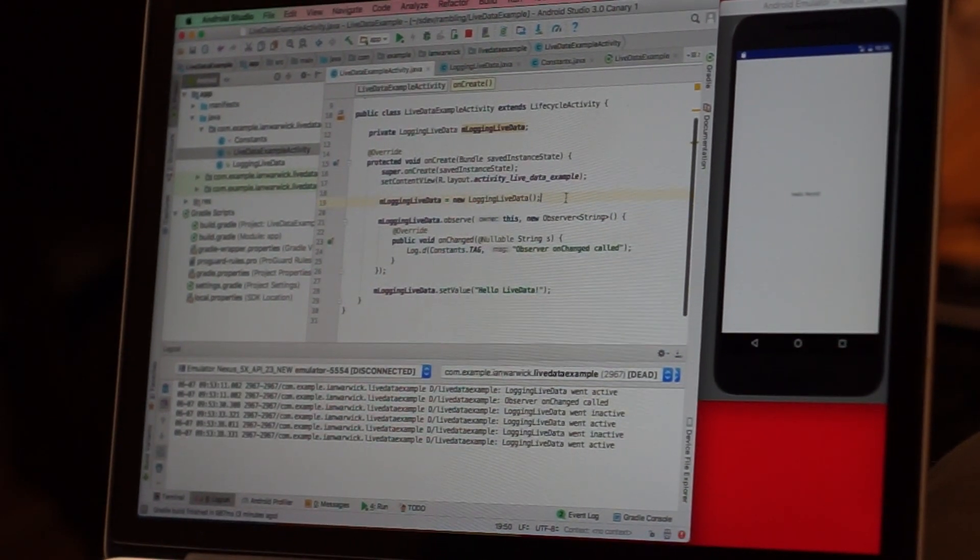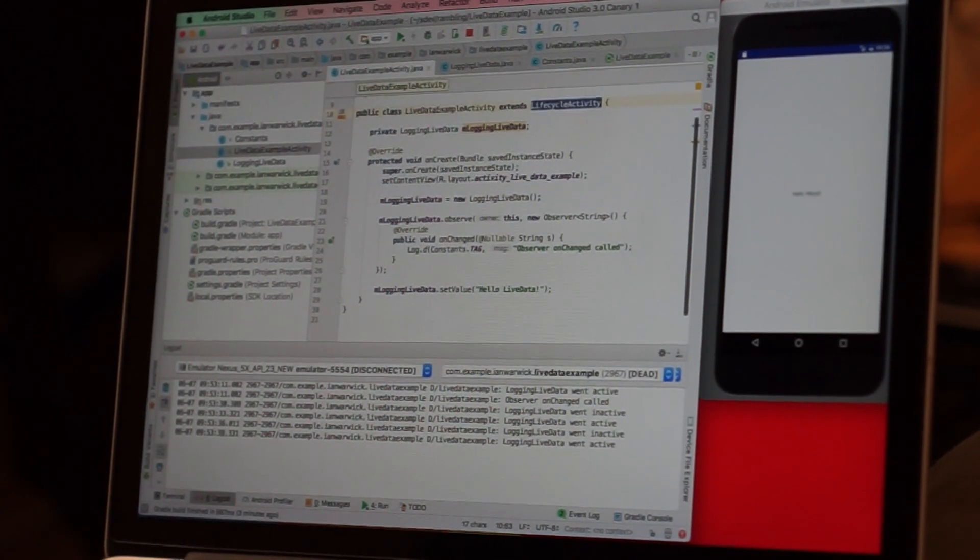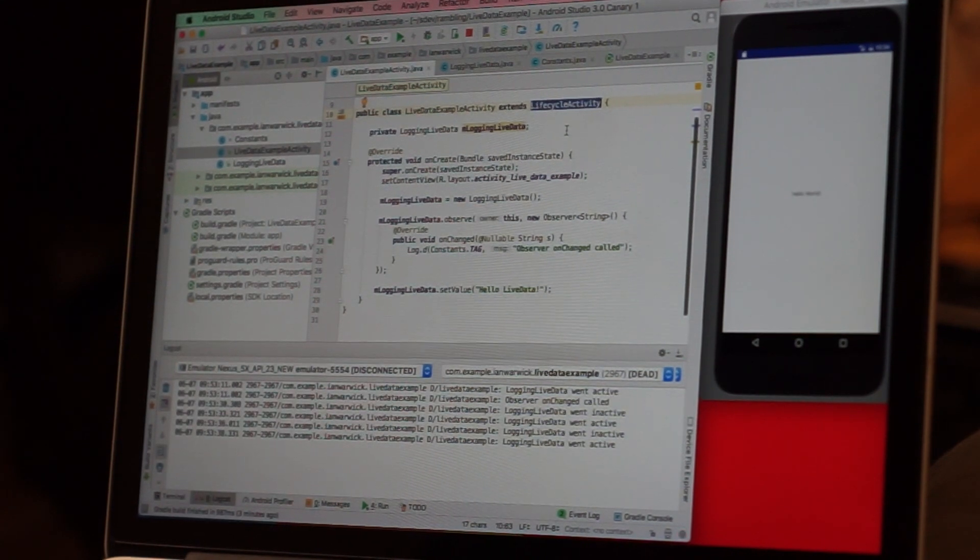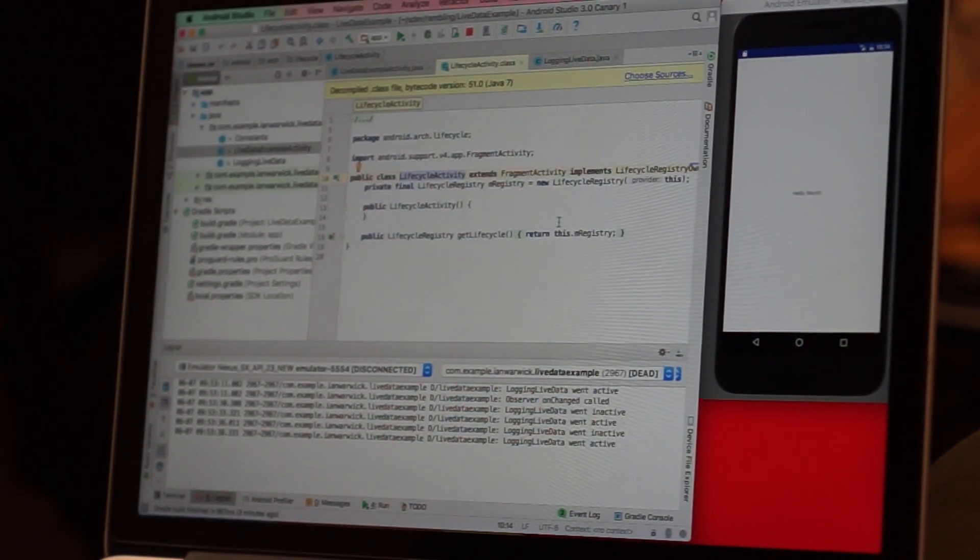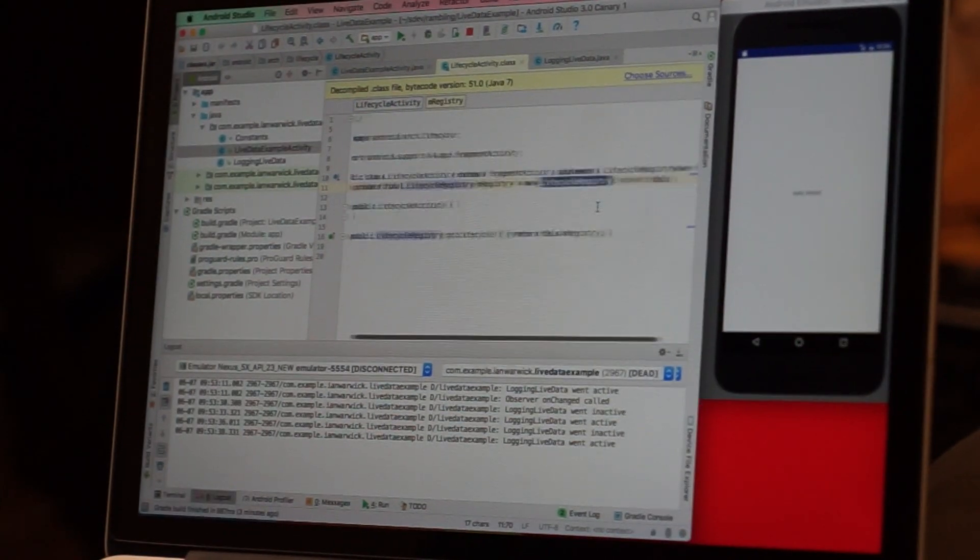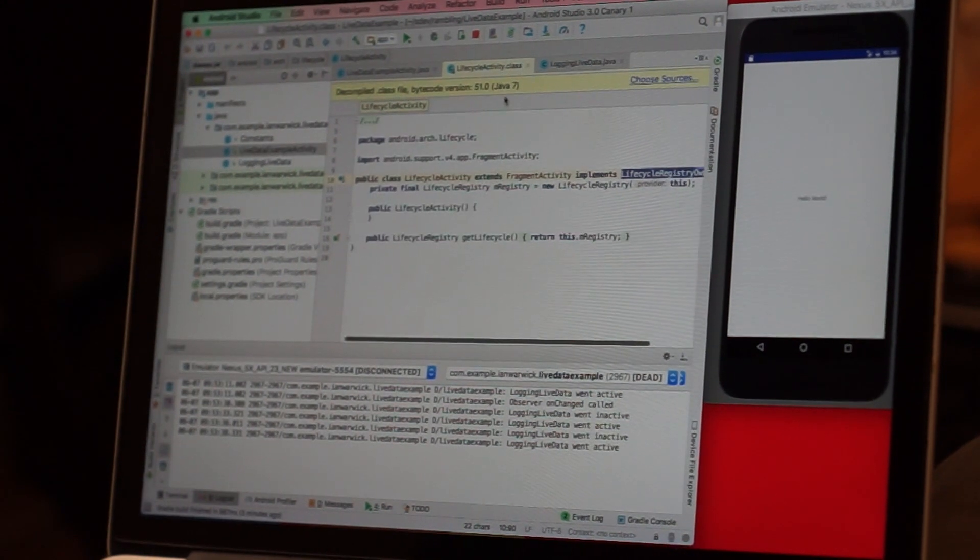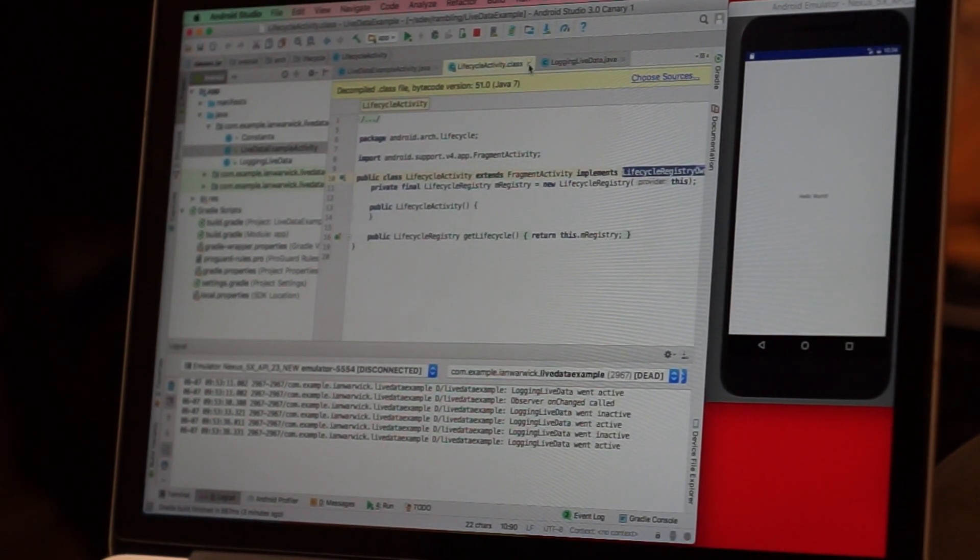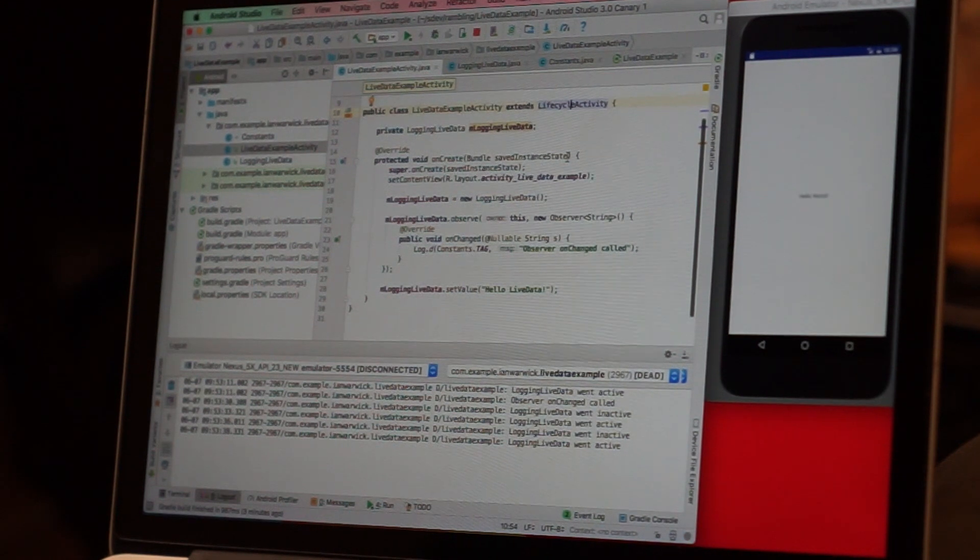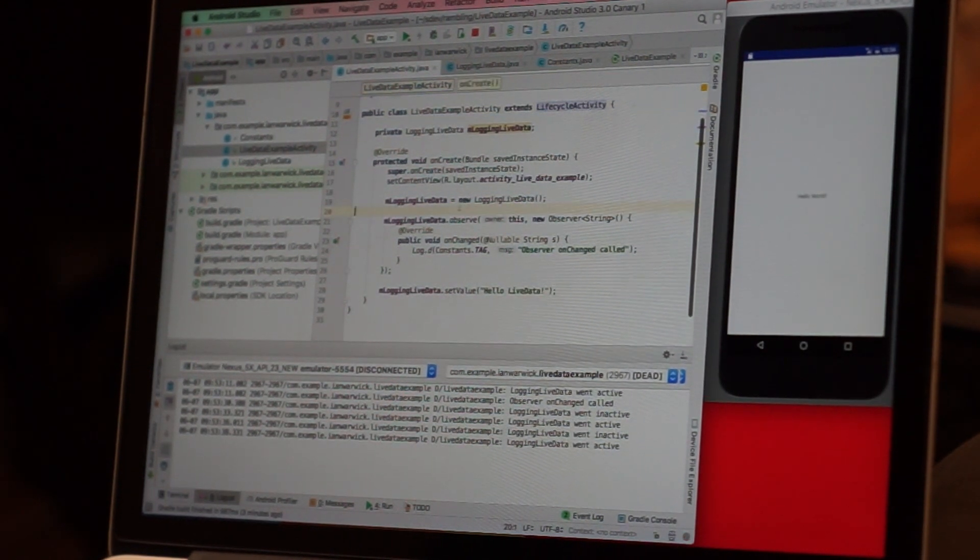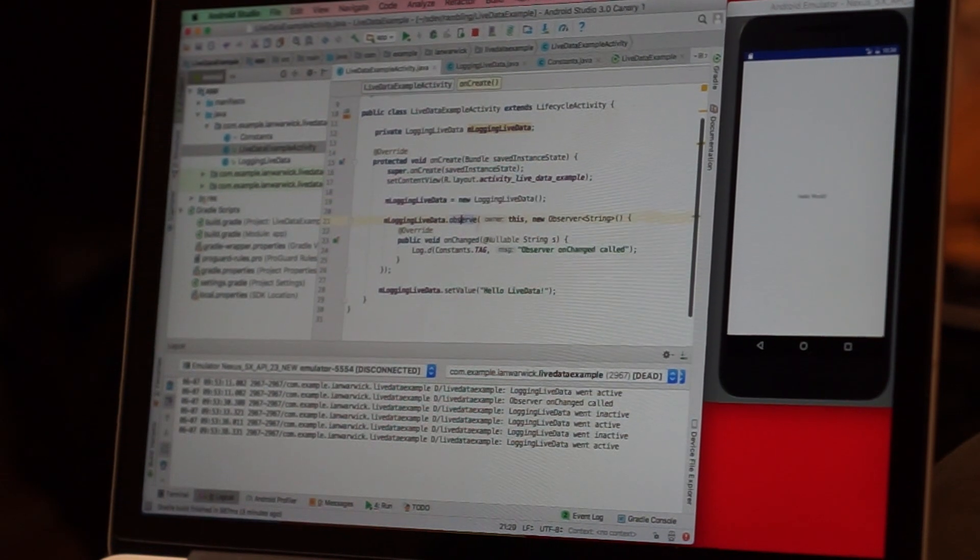Going to my very simple activity, you can see that importantly we must subclass lifecycle activity in order to give the LiveData along with its observer the lifecycle in which the observable is bound. You don't need to use lifecycle activity. If you jump in there you can see that all it does is provide a lifecycle registry. It implements an interface lifecycle registry owner. This is all you need to do to implement a lifecycle registry owner in your own activity.